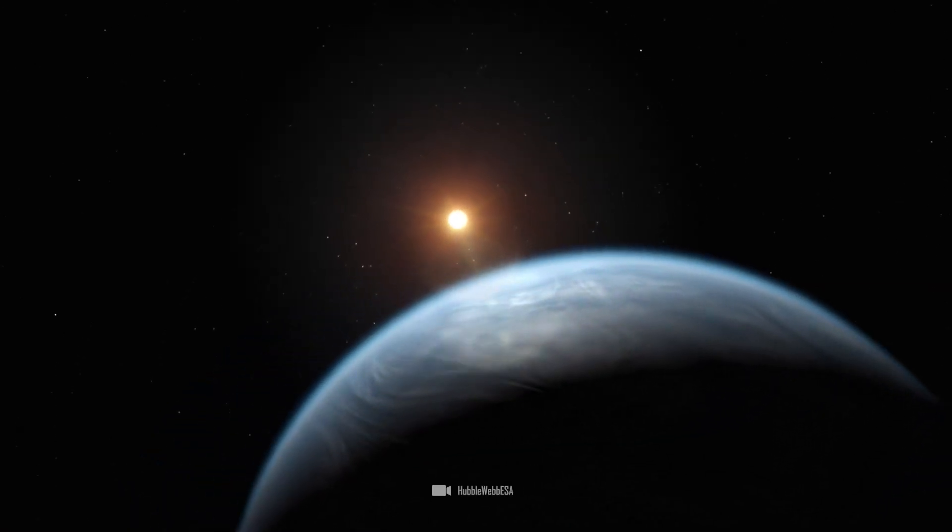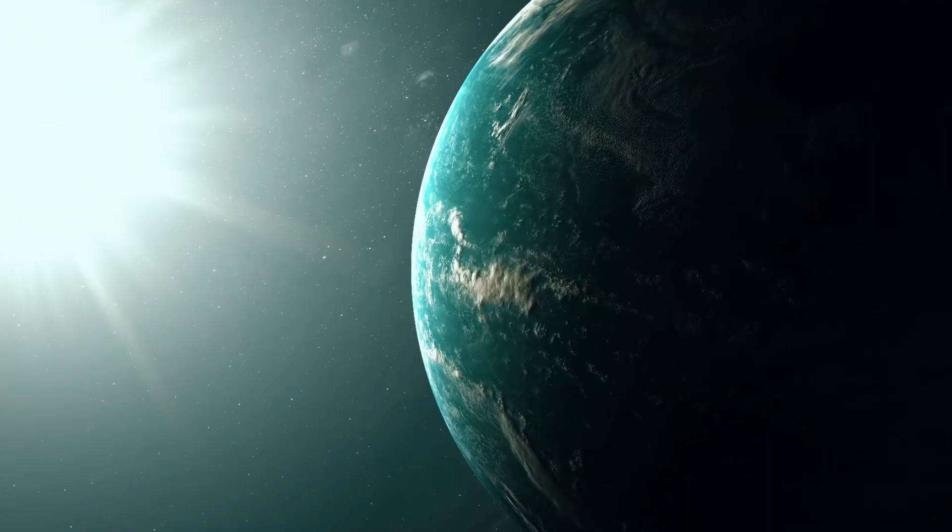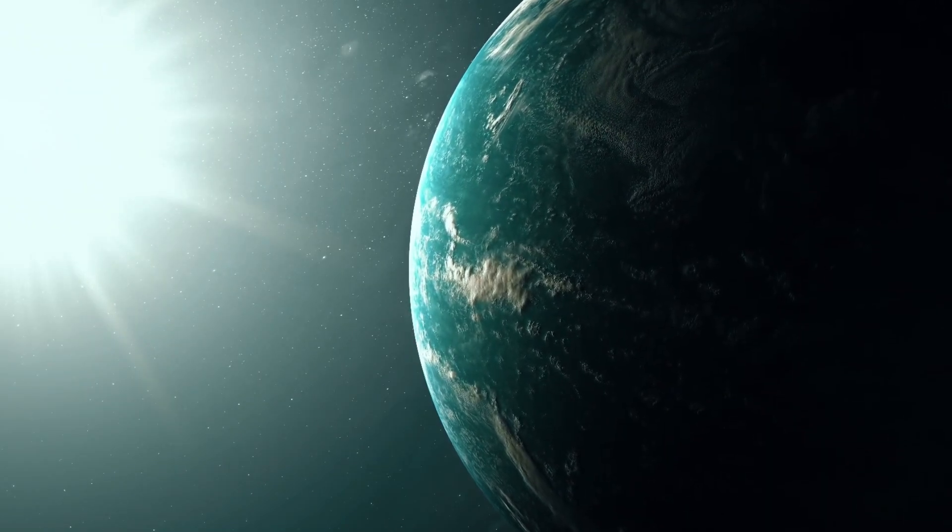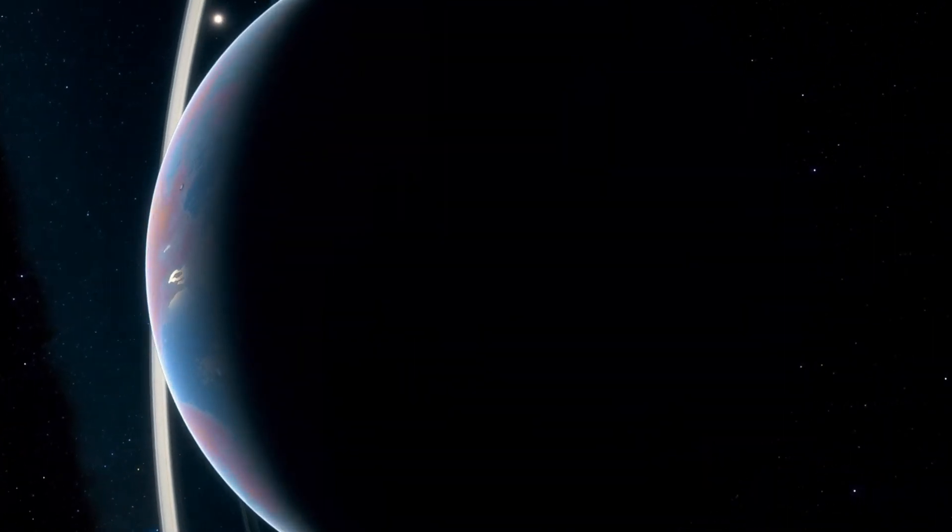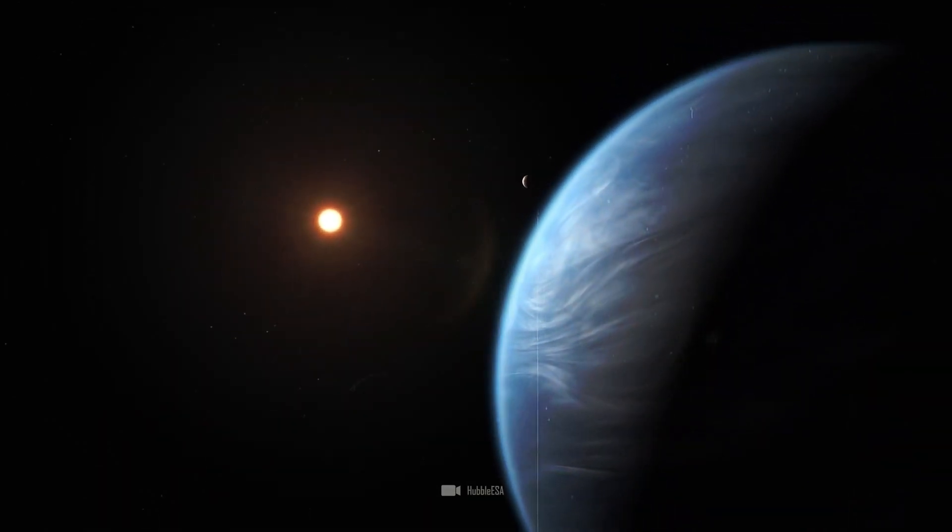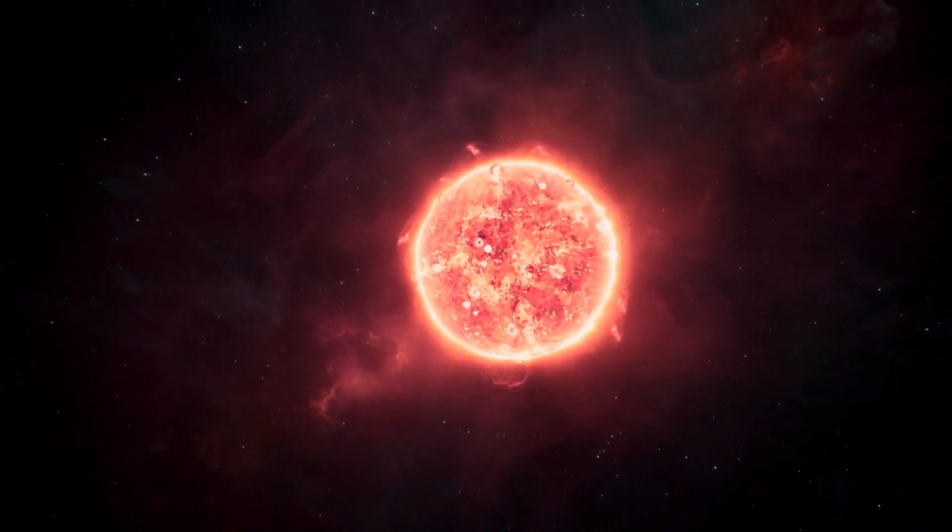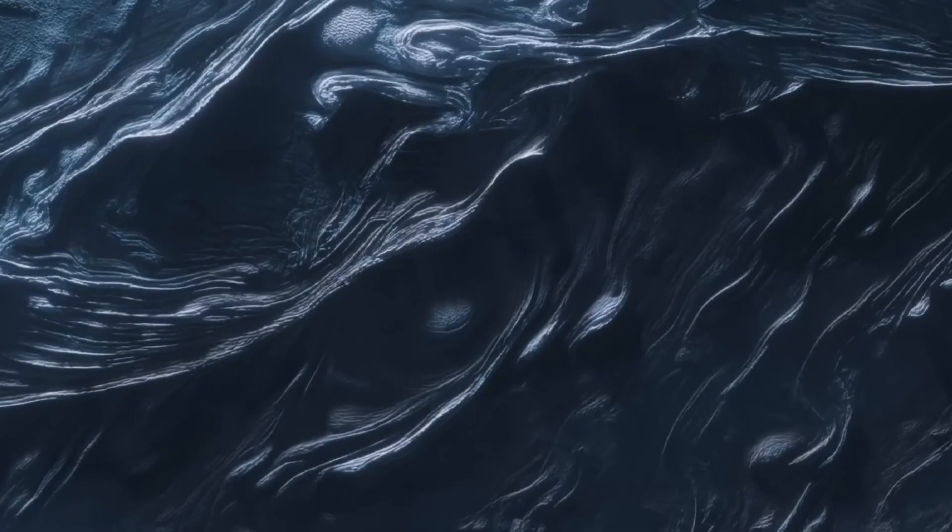The star K218 and the exoplanets K218b and K218c. It sounds crazy that this star system is just 124 light years away from us. In cosmic terms, that's a stone's throw, and basically, for all the decades we've been looking for traces of life in space, we've had this rich watery world right under our noses but haven't seen it.